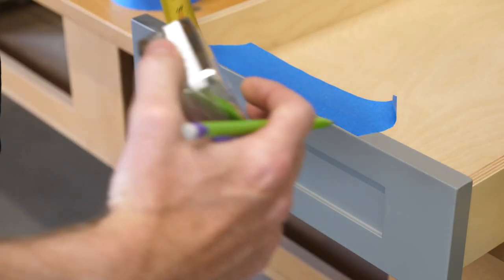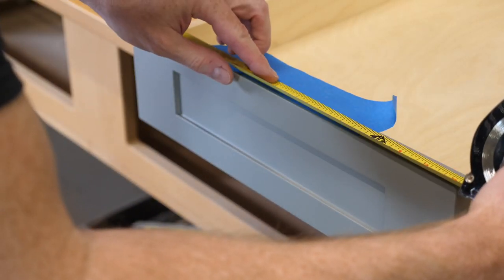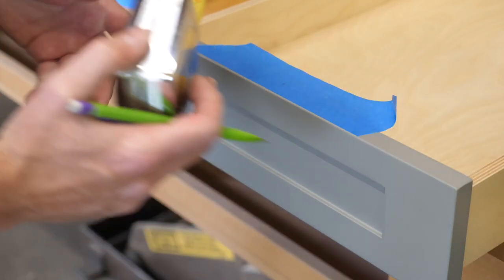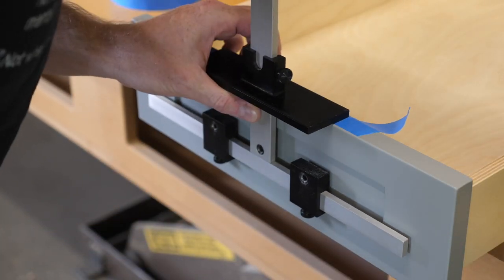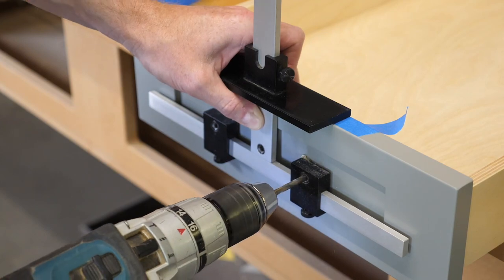I use the same jig to drill for the drawer pulls. I mark for center, and of course, I check from both sides because I am a belt and suspenders kind of gal.